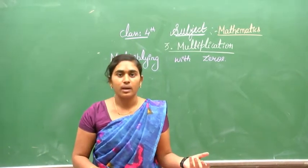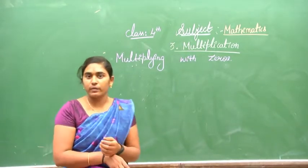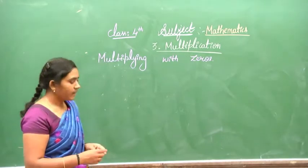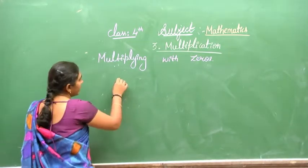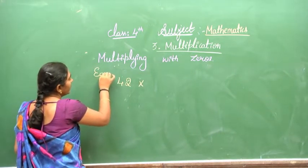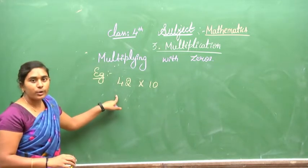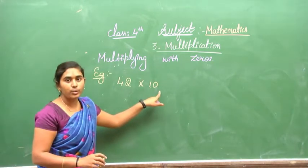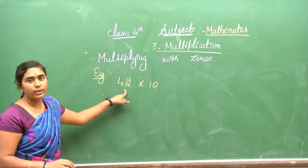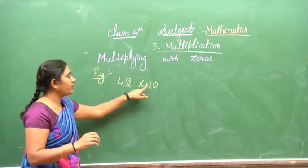Thank you so much for joining us. I have already told you about 42 multiplied by 10. For the given question, you need to multiply and then append the zeros — at least 42 with one zero.